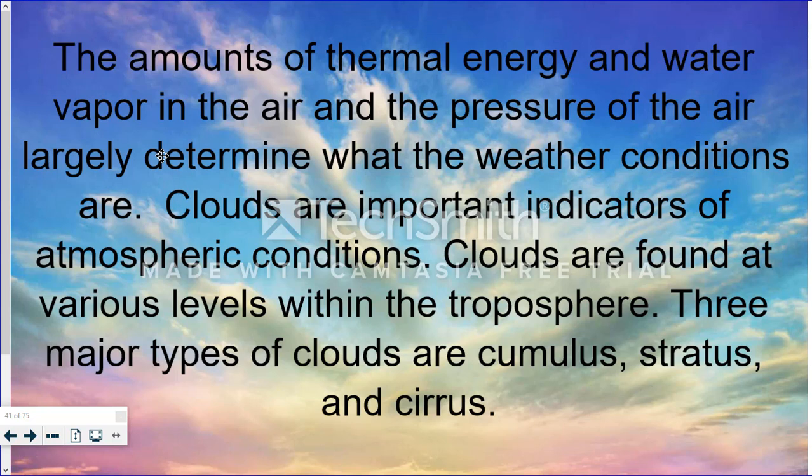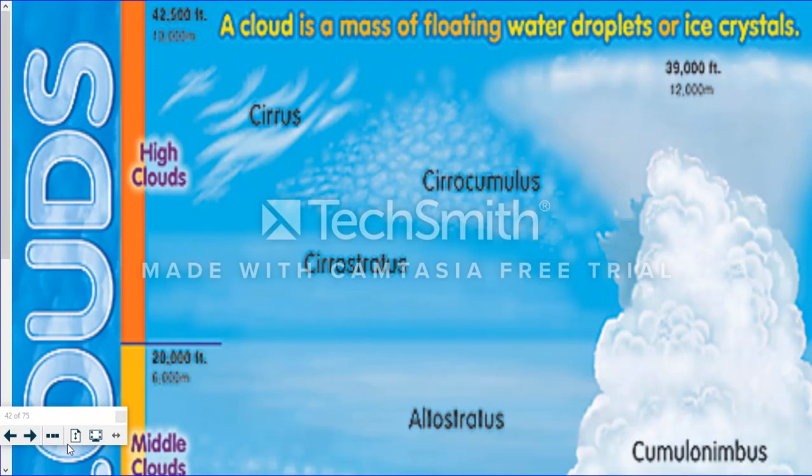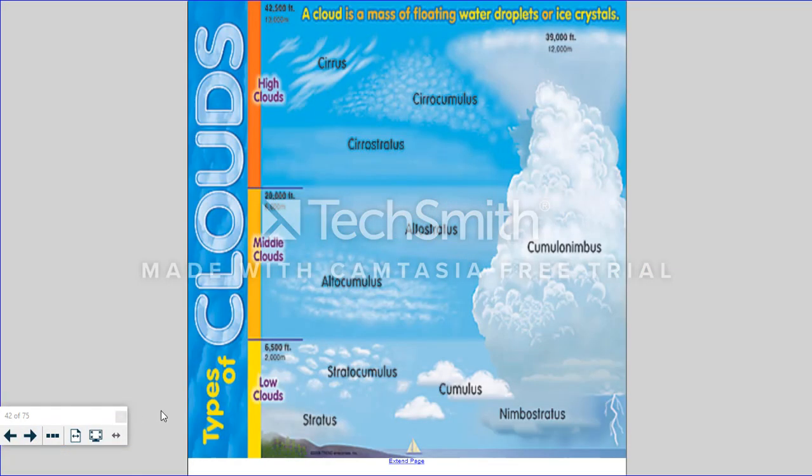The amounts of thermal energy and water vapor in the air, and the pressure of the air, determine what weather conditions are going to be like. Clouds are important indicators of atmospheric conditions. Clouds are found at various levels in our troposphere. And the three main types of clouds are cumulus, stratus, and cirrus. So if you look at the different layers that we have in our troposphere, you have lower clouds, medium clouds, and high clouds.